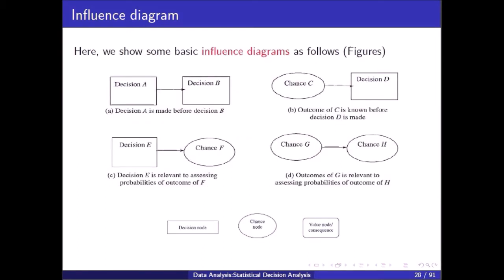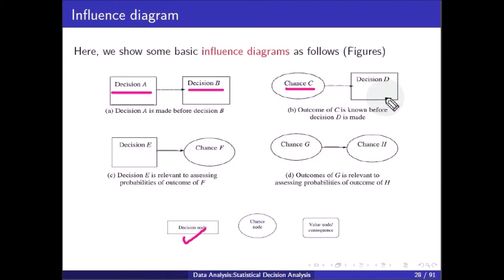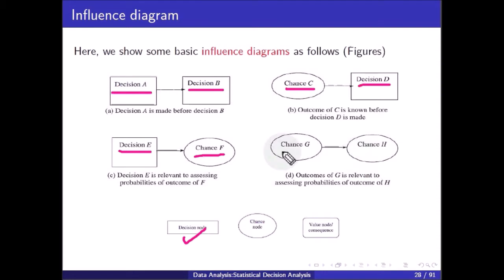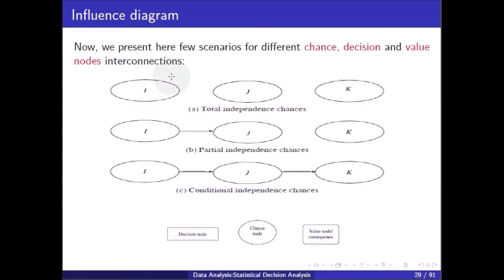We represent conditional arcs using solid lines and informational arcs using dotted lines. In the basic inference diagram examples: decision A is made before decision B; the outcome of C is known before decision D is made; decision E is relevant to assessing the probabilities of outcome F, so it's a chance node; and the outcome of G is relevant to assessing the probability of outcome H.